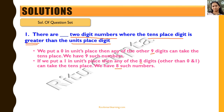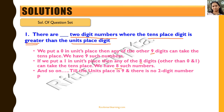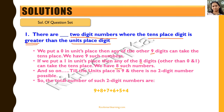We continue this until the units place is nine, where there will be no two-digit number meeting the criteria. The total count is nine plus eight plus seven plus six plus five plus four plus three plus two plus one, which equals 45. So there are 45 such numbers meeting the criteria of the question.